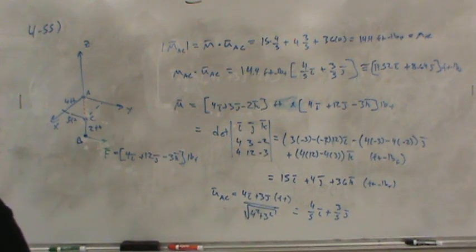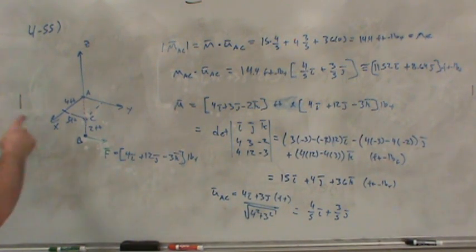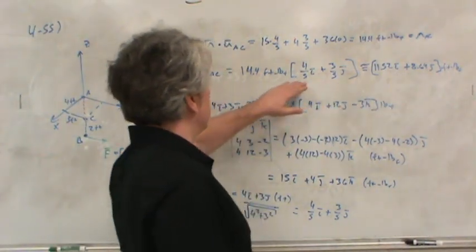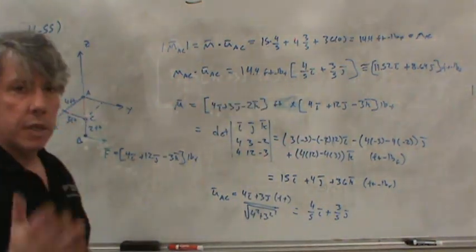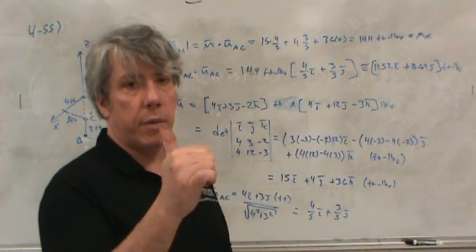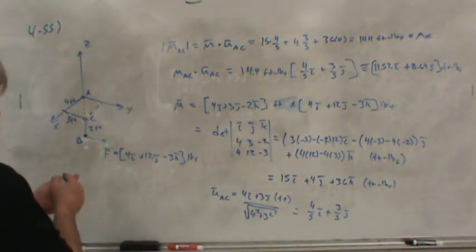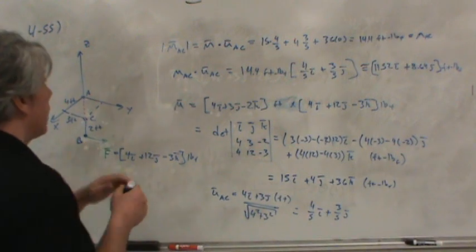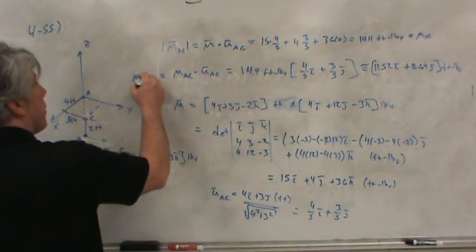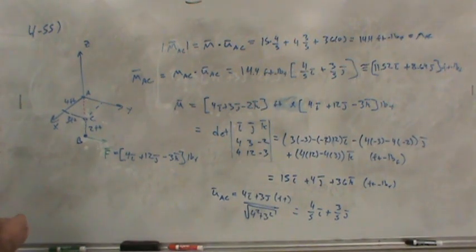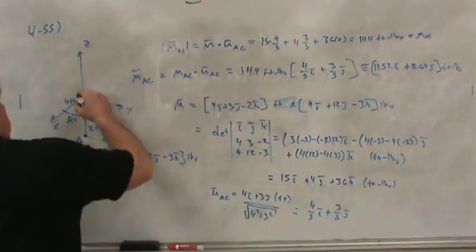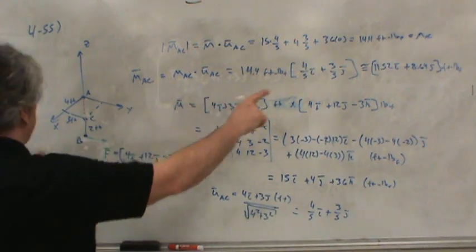Now, you might look at this and say, well, wait a second. That doesn't make sense. I mean, after all, a moment has to be around this line. How can you write that the moment lies along the line? Because that's what this says, right? This just says that this moment lies along the line AC. Remember I told you about double-headed arrows and pointing your right thumb in the direction of the moment.